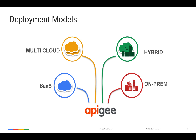Today's discussion is focused on the hybrid model — the micro gateway. The micro gateway falls under the concept of a hybrid deployment model, where you use the micro gateway as a runtime environment inside your on-premises environment and leverage Apigee's other features in the cloud.